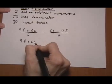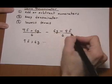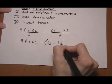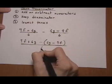9f plus 6g, take away the entire numerator. And to remind myself that it's the entire thing being subtracted I'm going to put parenthesis, otherwise I might forget to distribute my negative sign. Keep the denominator.